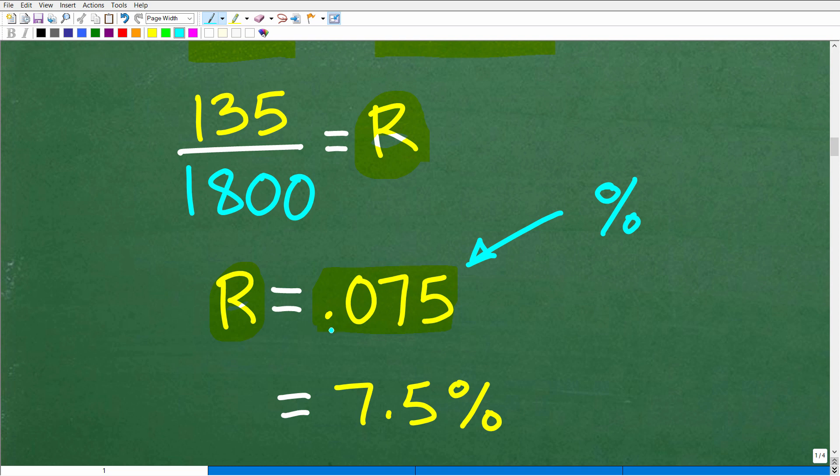And how do we do that? Well, you multiply by 100 or effectively, you just move the decimal point over two places to the right. That's the consequence of multiplying by 100. So however you remember it, we're going to end up with 7.5%. So that is the annual rate that we're getting on this particular investment,